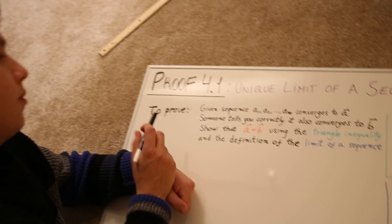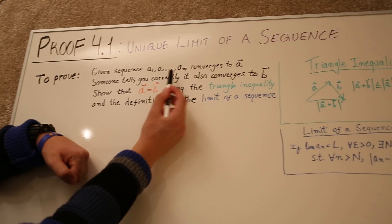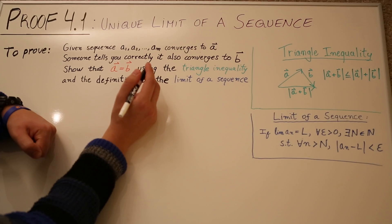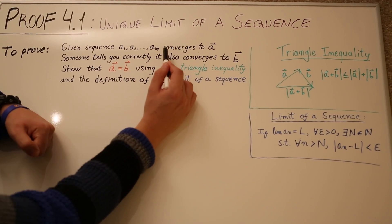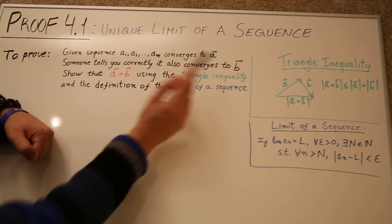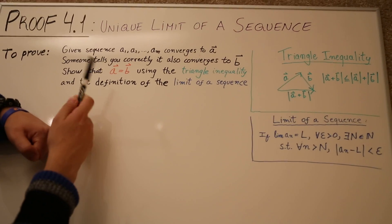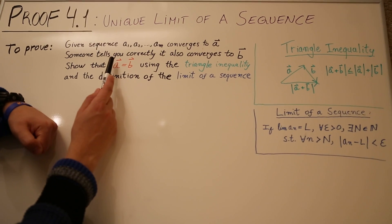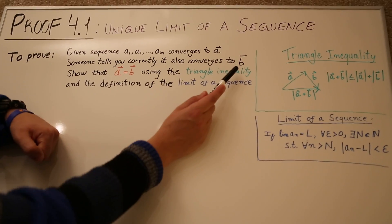And the proof goes like this. We have a sequence A1, A2, up to AN, and we give it to a person. We give it to, let's call her Alice, and she tells us it converges to A. And then we take that sequence and we give it to somebody else, who for lack of originality we'll call Bob, and he tells us, also correctly, that it converges to B.